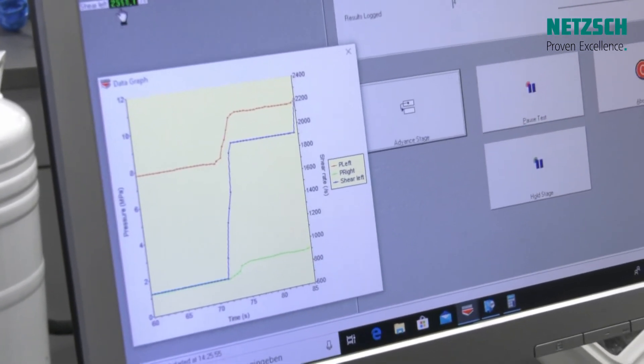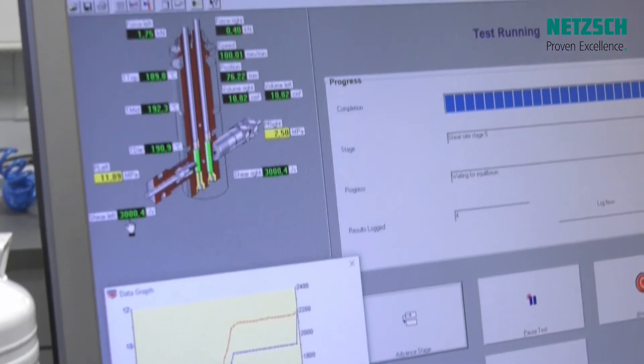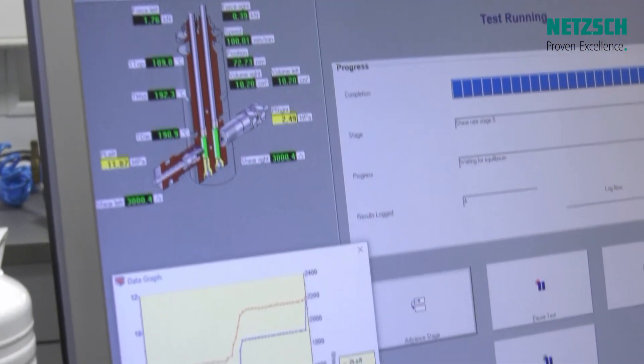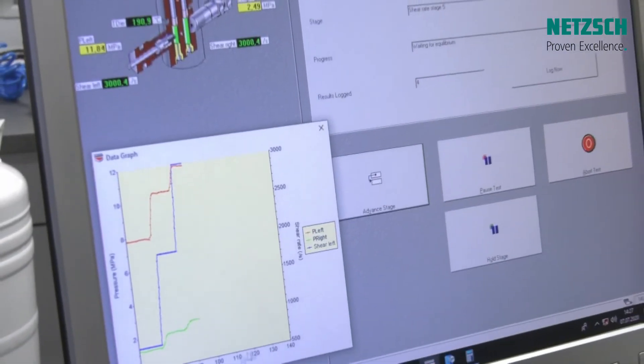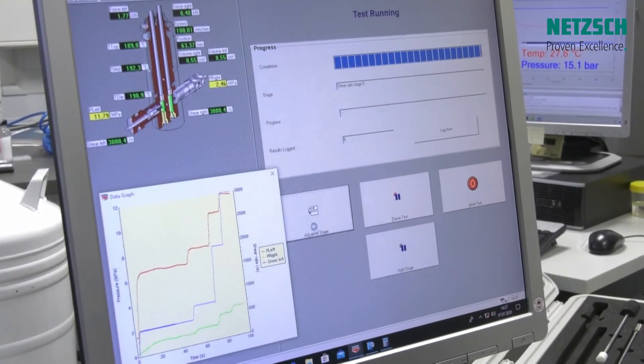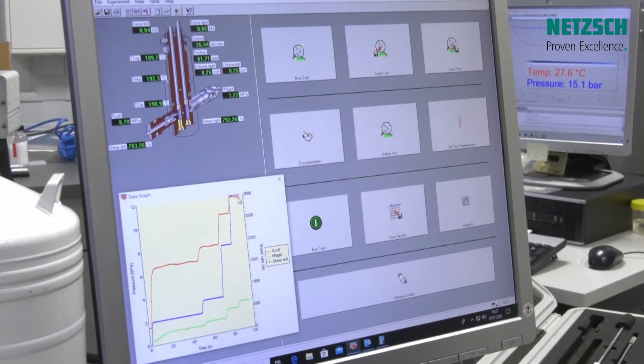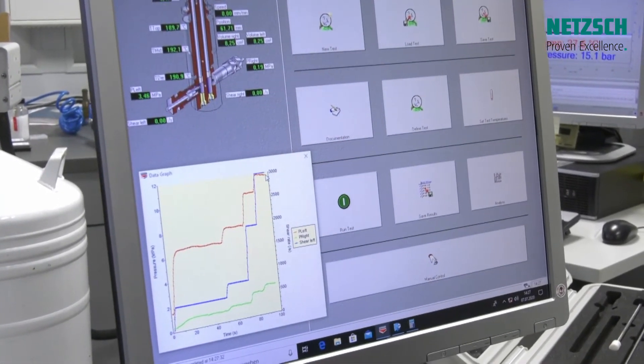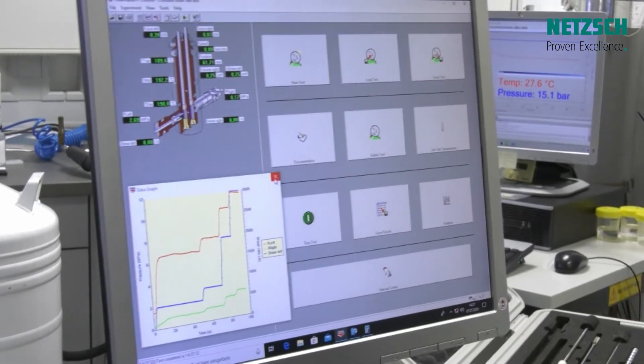And we are now finally at about 3000 reciprocal seconds. This is a typical injection molding shear rate. And you see the material has become in equilibrium. And now for these four stages of different speeds, we can do the analysis.